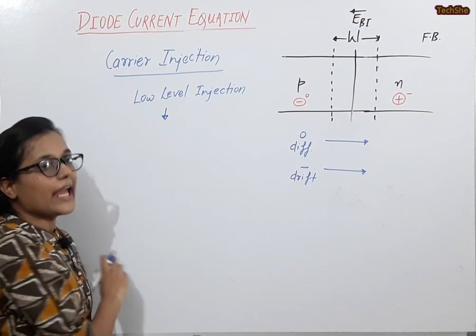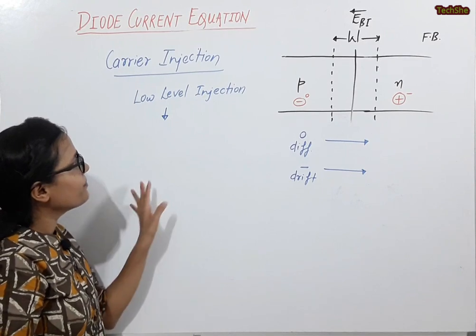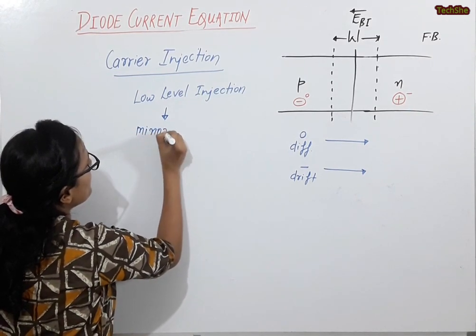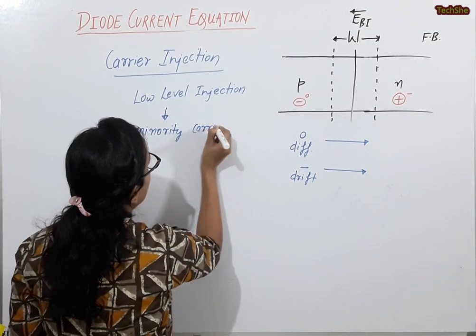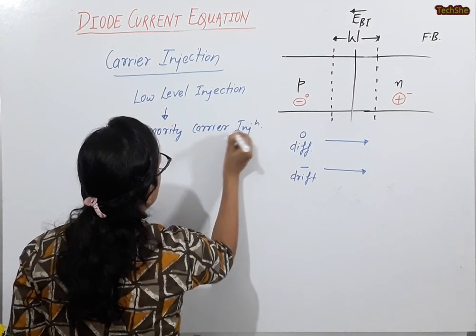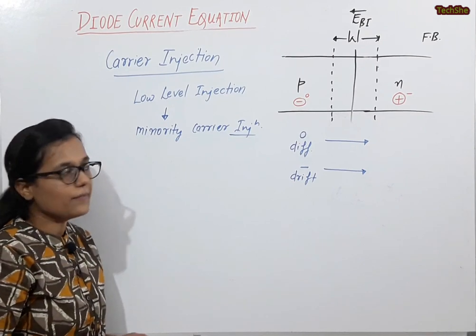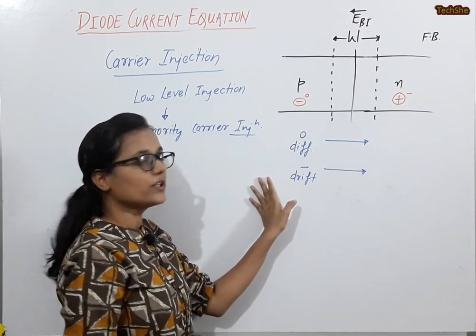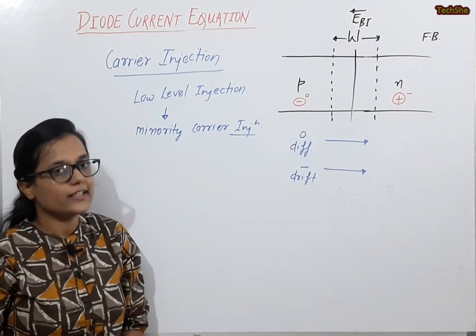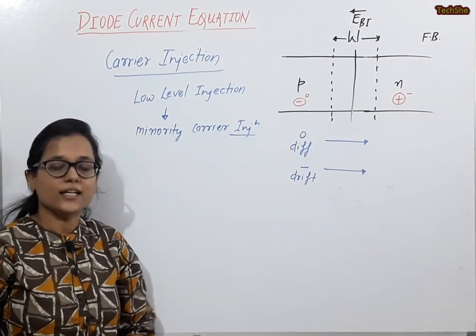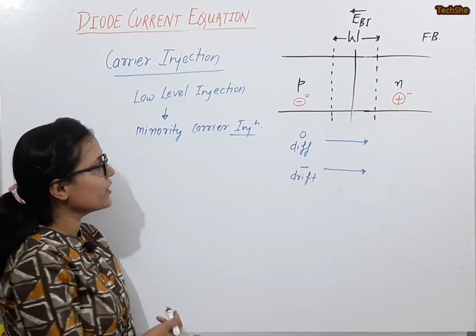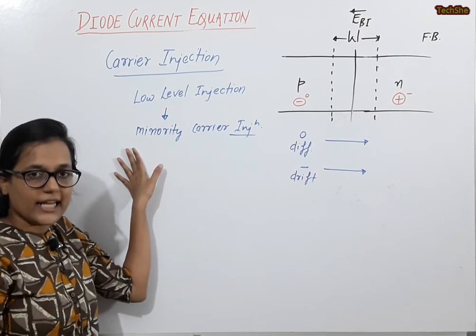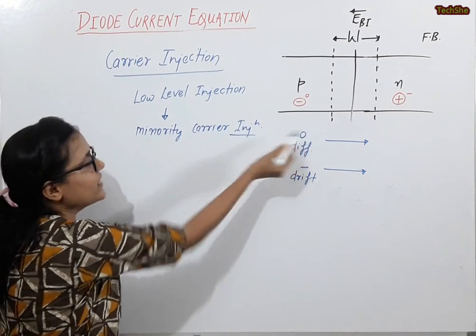Under low-level injection, there will be a negligible change in majority carrier concentration but a considerable change in minority carrier concentration. If we add injected carriers in small quantities to the majority carriers, the change is negligible. But in minority carriers, the same addition is considerable. This is the concept of minority carrier injection, and using this, we will find the current.